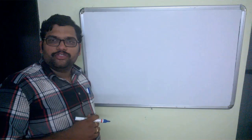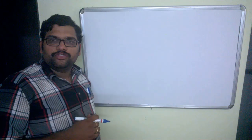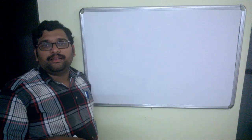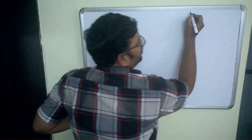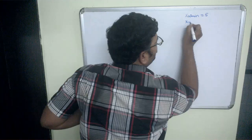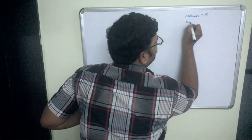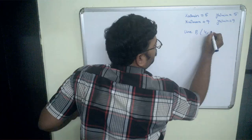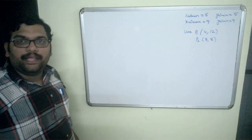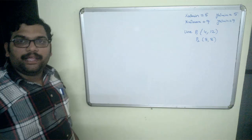Now let us solve a numerical example using the Liang-Barsky line clipping algorithm. The window boundary is: XW_min = 5, XW_max = 9, YW_min = 5, YW_max = 9. The line is from P1(4, 12) to P2(8, 8). We plot this: the window occupies x from 5 to 9 and y from 5 to 9. Point P1 at (4,12) lies outside the window and P2 at (8,8) lies inside.